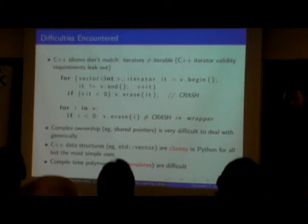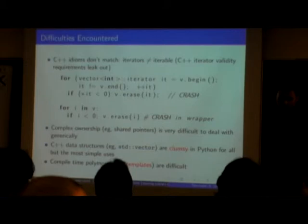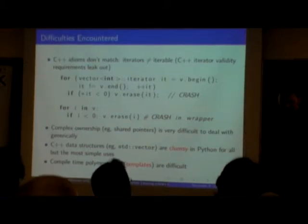There's also complex ownership. Like shared pointers, it's very difficult to deal with in a binding. C++ data structures are clumsy in Python, because you have to always convert them back and forth. And templates are really difficult to handle, too.